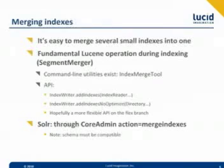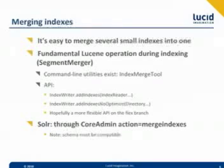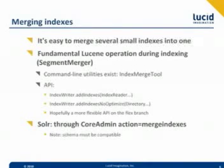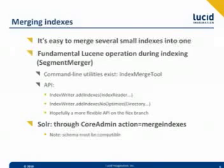Let's start from the easiest subtopic: merging indexes. This is actually very easy to do, and that's one of the fundamental Lucene operations. There's a class in Lucene called Segment Merger. As you keep adding documents when indexing, IndexWriter initially buffers these documents in memory. But then periodically, as the buffer fills up, it flushes this buffer to a new small segment on disk. And then after a while, again periodically, these small segments get merged into larger ones. So this is a fundamental operation that is used always in Lucene.